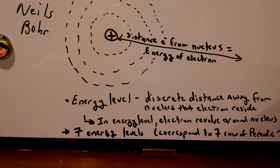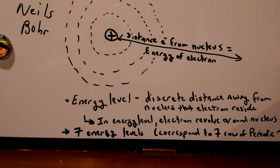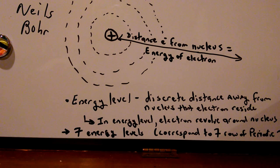What he did was, he basically said that the electrons can't be anywhere outside the nucleus. They must be in discrete locations. What I'm showing here is a little example of a nucleus, and the dotted lines are what's called the energy levels — the discrete distances away from the nucleus that the electrons can reside in. As part of his theory, the distance the electron is away from the nucleus is equivalent to how much energy that electron has. So the further out you go, the more energy that electron has.